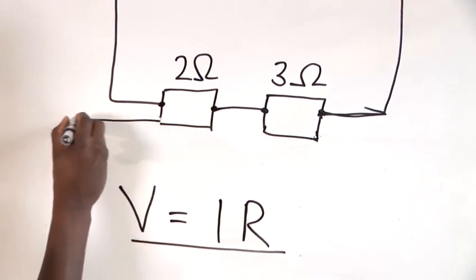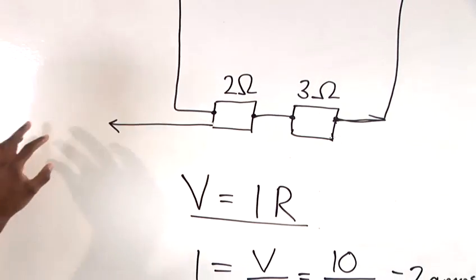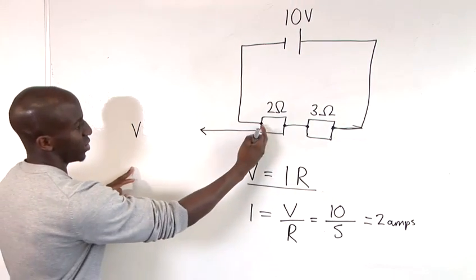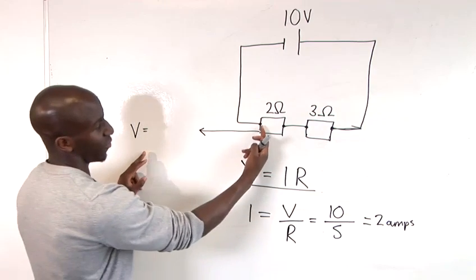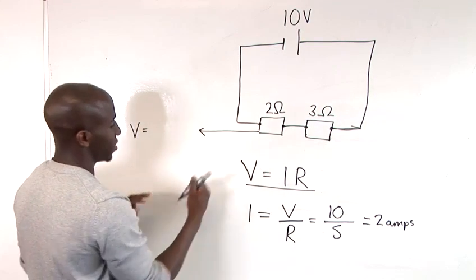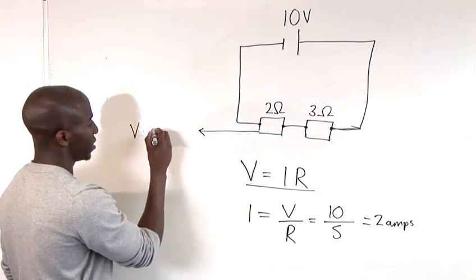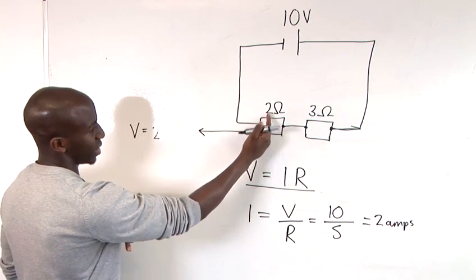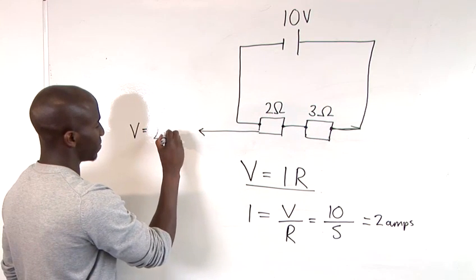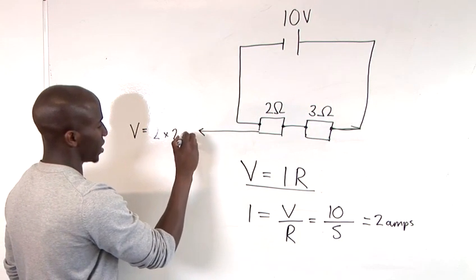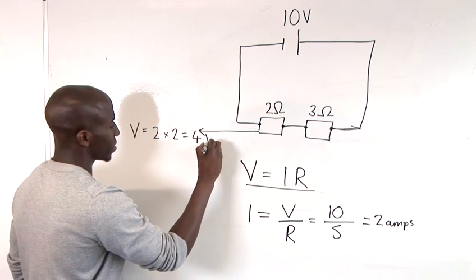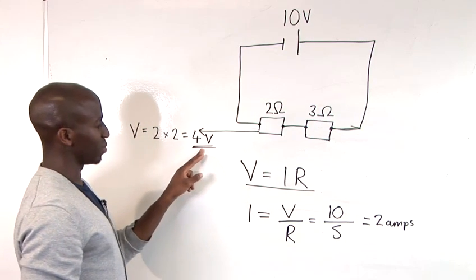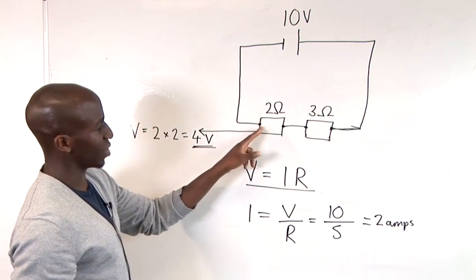So we come out here, and we say the voltage drop across these two points is equal to the current that flows across here by the resistance. So again, just V equals IR. So the current is 2 amps, and the resistance is 2 ohms. So we've got 2 amps, multiplied by 2 ohms, which is just equal to 4 volts. Now that is the particular voltage drop that occurs across here.